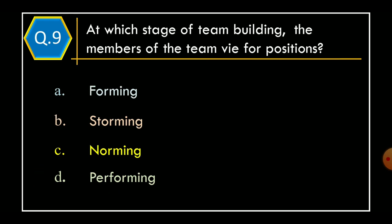Question 9: At which stage of team building do the members of the team wait for positions? Option A: Forming; Option B: Storming; Option C: Norming; Option D: Performing. The correct option is Option B, Storming.